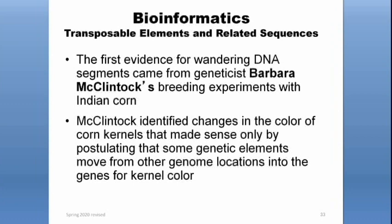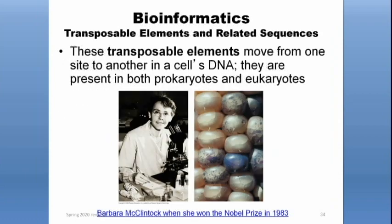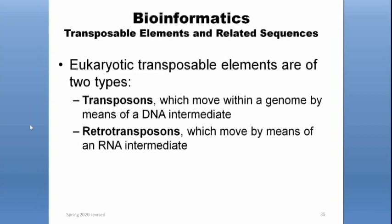The last topic we'll cover are transposable elements and their related sequences. The first evidence for these jumping genes came from Barbara McClintock's breeding experiments with Indian corn. McClintock identified changes in the color of corn kernels that made sense only by postulating that some genetic elements move from one genome location into the genes for kernel color. These transposable elements move from one site to another in the cell's DNA and are present in both prokaryotes and eukaryotes. McClintock won the Nobel Prize in 1983. There are generally two types: normal transposons, which move through a DNA intermediate, and retrotransposons, which move by means of an RNA intermediate.